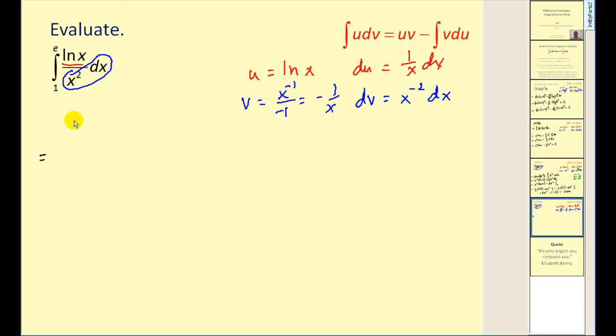Apply the integration by parts formula. u times v minus integral of v du. Simplify this. Have a plus.